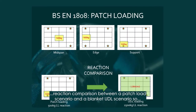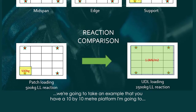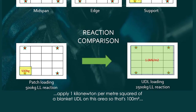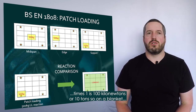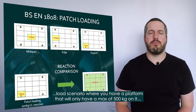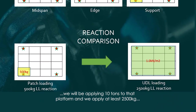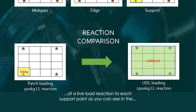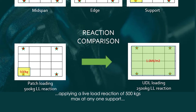Looking at the reaction comparison between a patch load scenario and a blanket UDL scenario: take a 10 by 10 meter platform and apply one kilonewton per meter squared blanket UDL — that's 100 m² times one, which is 100 kilonewtons, or 10 tonnes. So on a blanket load scenario where the platform will only have a maximum of 500 kg on it, we'd be applying 10 tonnes to that platform, resulting in at least 2,500 kg of live load reaction at each support point. But with the patch load route, we'd only be applying a live load reaction of 500 kg maximum at any one support. So there are massive benefits there.